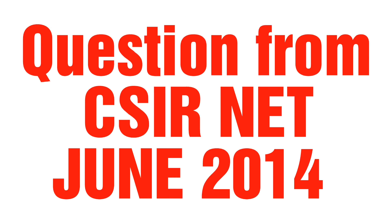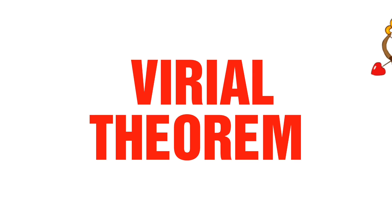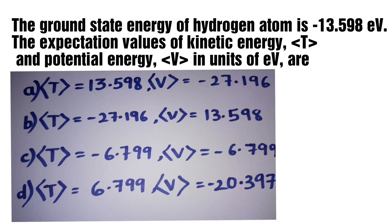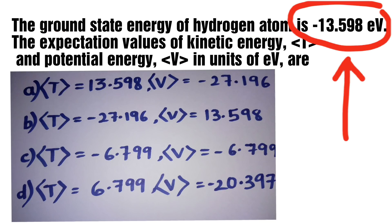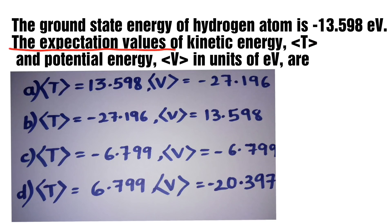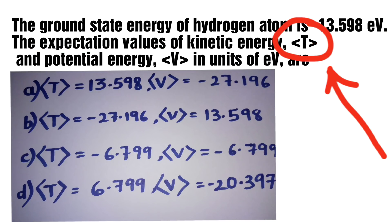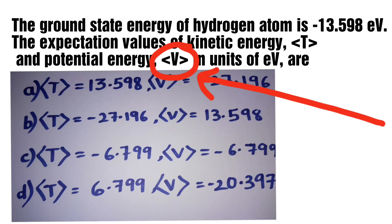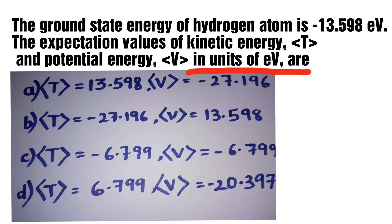Hello friends. In this video, we will solve a question from June 2014 based on the Virial Theorem. For a ground state energy of hydrogen atom of negative 13.598 electron volt, the expectation values of kinetic energy and potential energy in units of electron volt are to be found.